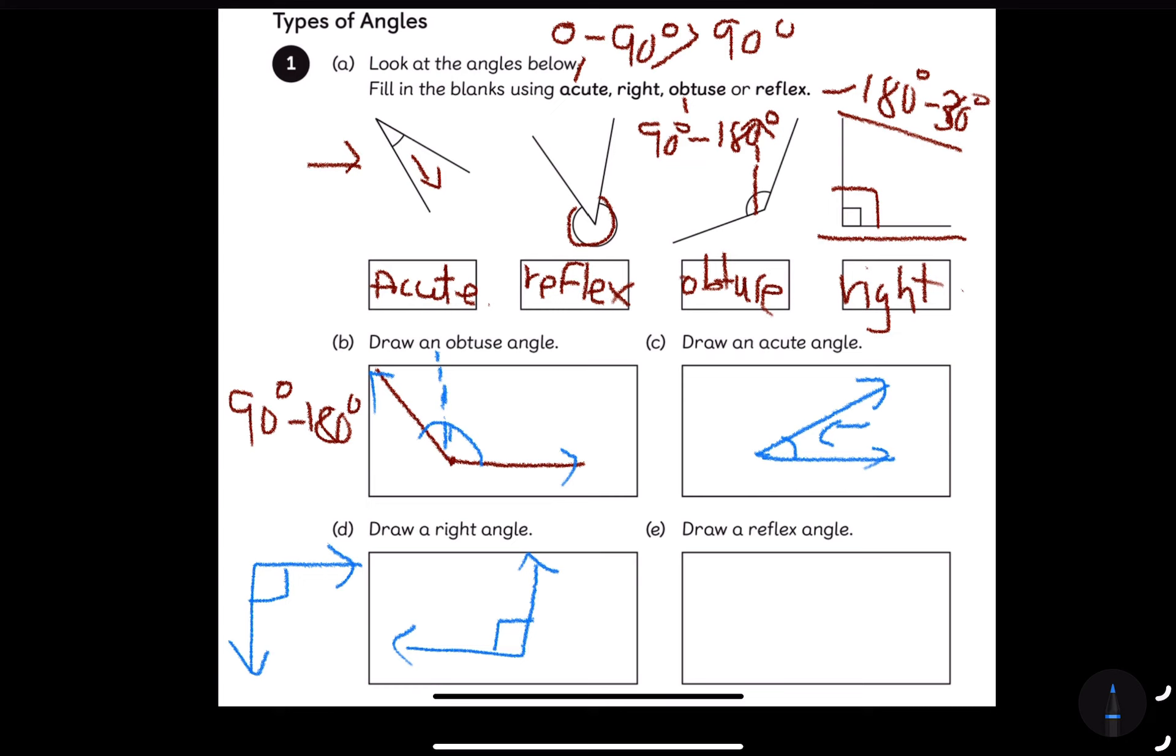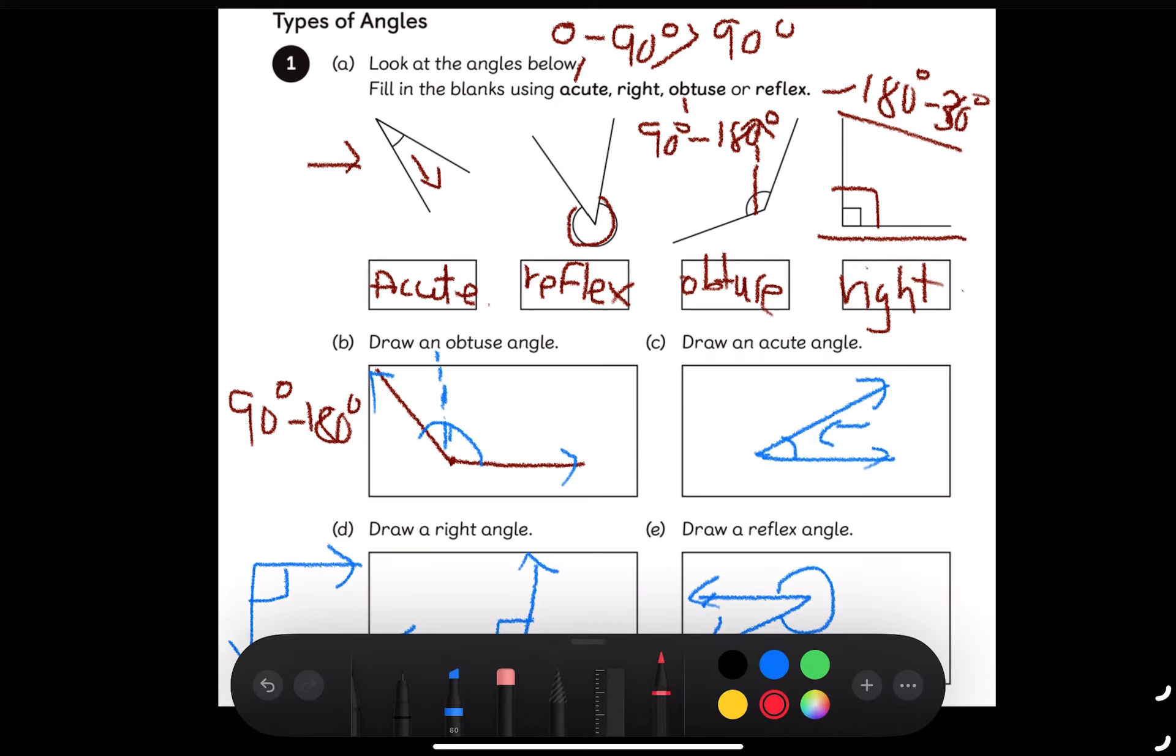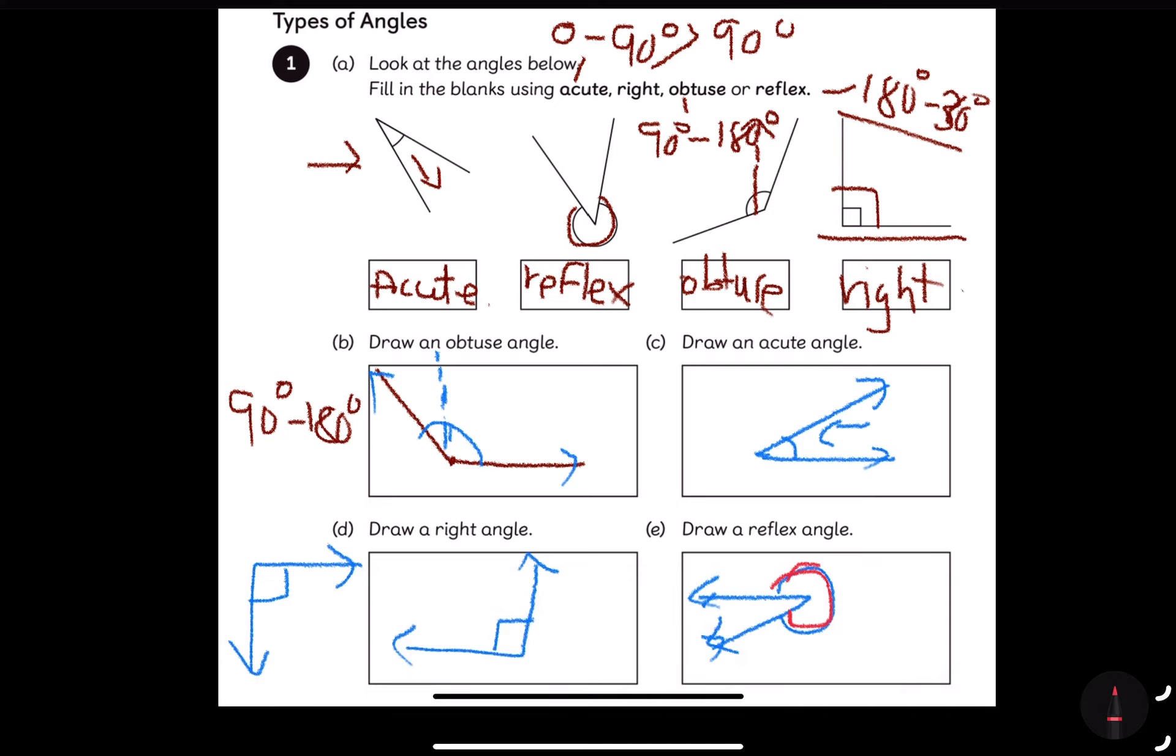Finally comes my reflex angle. Any kind of angle that looks acute, but the arc comes outside. Important is this arc which should be outside. So this is what actually denotes my reflex angle, which is going to be between 180 degrees to 360 degrees.